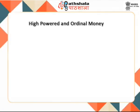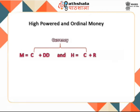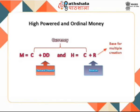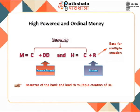Comparing ordinary money M = C + DD with high powered money H = C + R, currency C is common to both. While M has demand deposits DD, H has reserves R. The high poweredness of H comes from the presence of R. Every unit of R serves as the base for multiple creation of DD in a fractional reserve system. Currency C has the potential to become high powered the moment it is converted into DD, which then becomes the reserves of banks and leads to multiple creation of DD, increasing money by a multiple amount.